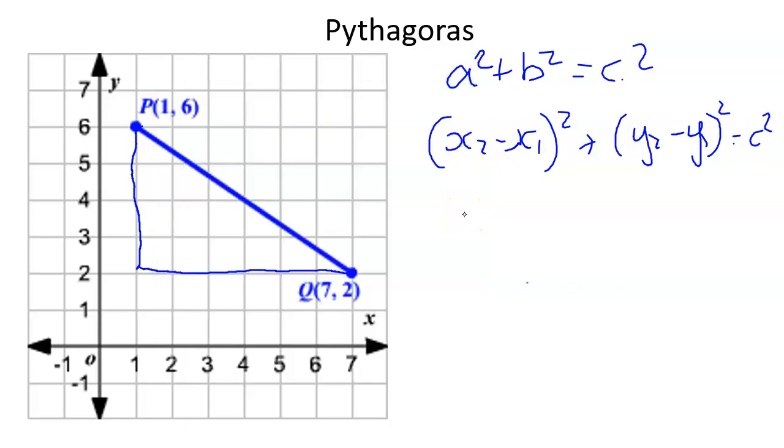Anyway, back to the original problem. I want to work out this length. So I'm from seven back to one, squared, plus from two back to six, which is minus four squared, and that equals c squared.